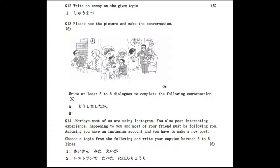Alternatively, you can write five to six dialogues to complete a given conversation where A asks 'Do shimashita ka?' (What happened?) and B explains the situation — for example, A is a doctor and B is a patient. The fourteenth question is: make a new Instagram post on either 'Saikin mita eiga' (the movie you saw recently) or 'Resutoran de tabeta nihon ryouri' (Japanese food you had at a restaurant). I will leave these creative questions to you. Use this sample paper as a reference, prepare properly, and do well in your exams. I hope this video was useful. Don't forget to subscribe, give a thumbs up, and share it with others. Thank you for watching and see you in the next video. Bye!